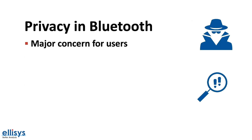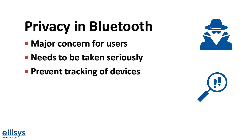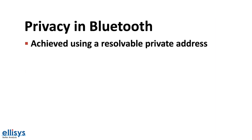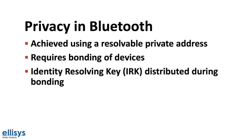Privacy is a major concern for users of Bluetooth devices. In this context, privacy means making sure that untrusted parties are not able to track a device by its Bluetooth address. If no careful measures are put in place, this address can be used to track users. Fortunately, Bluetooth Low Energy provides privacy features to safeguard against such attacks. Privacy for Bluetooth devices is achieved by using a resolvable private address, which requires bonding of the two Bluetooth devices in order for one to resolve the address of the other.